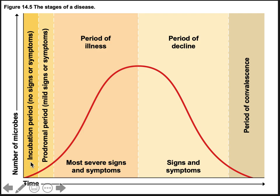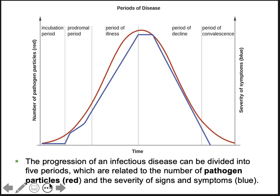The incubation period is relatively small compared to the period of illness. The red line shows the relationship between your symptoms and the amount of microbes actually colonizing your body — as microbes increase, your symptoms increase. The progression of an infectious disease can be divided into five periods, related to the amount of pathogens shown in red and severity of signs and symptoms shown in blue.